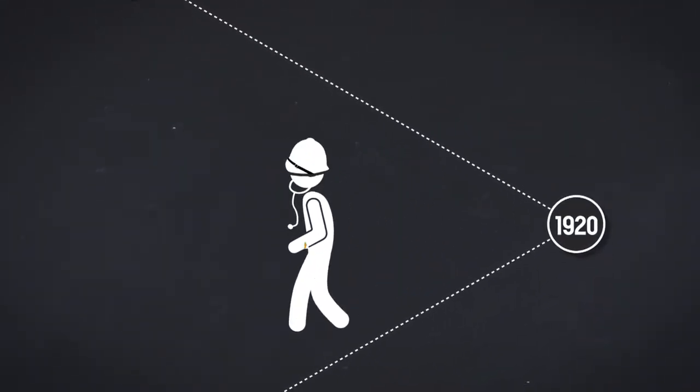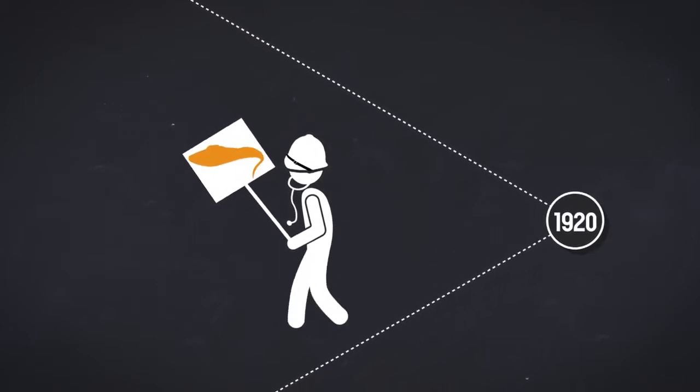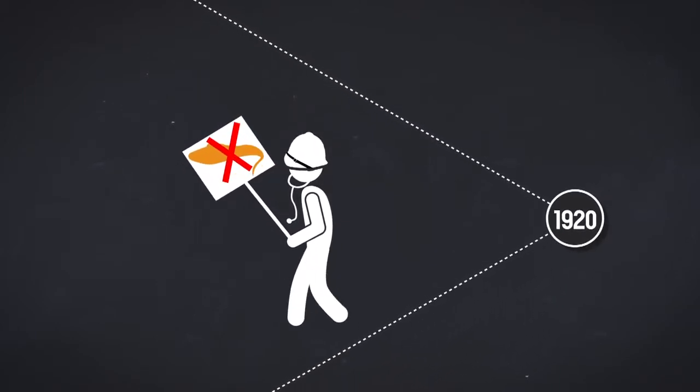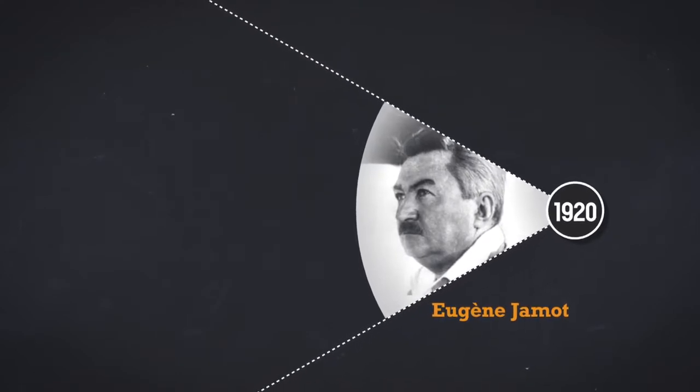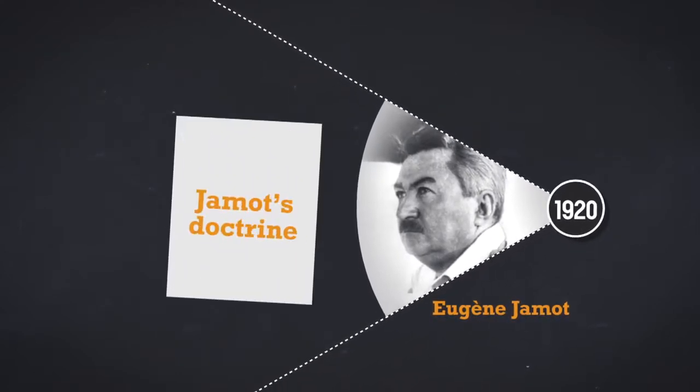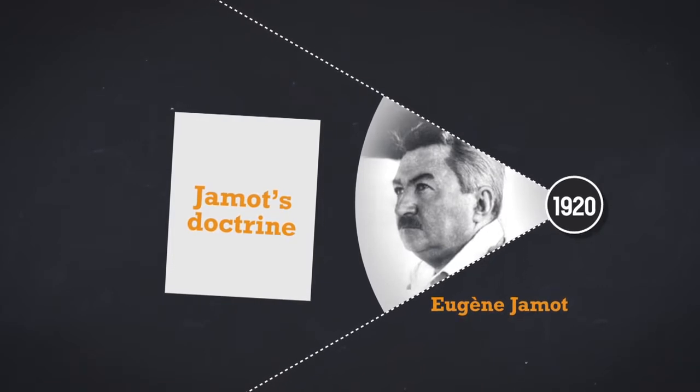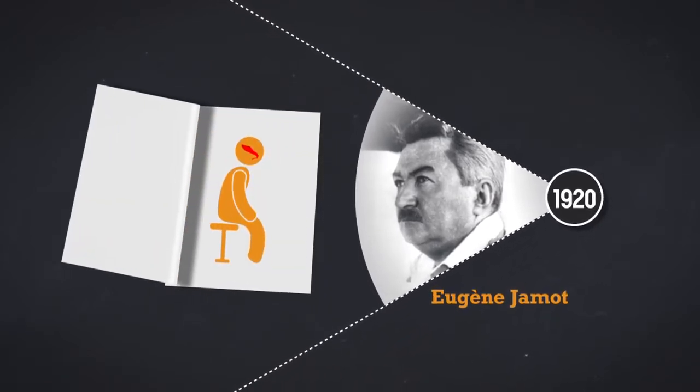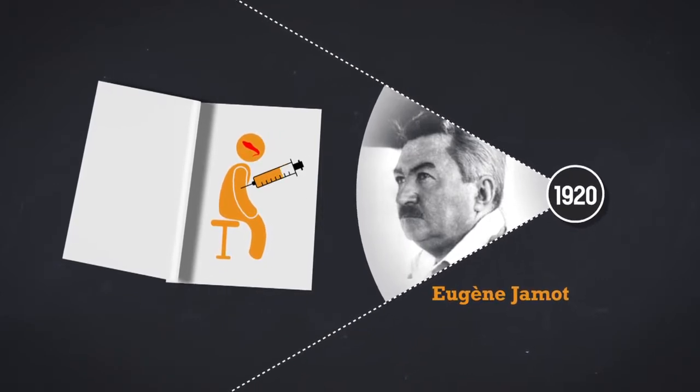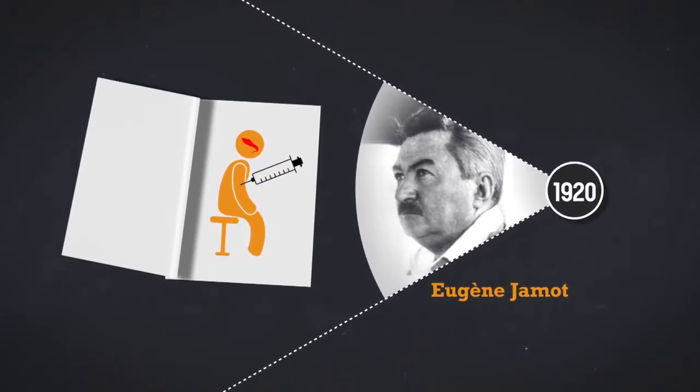At the beginning of the 1920s, colonial medicine attempted to eradicate the disease. Eugène Jameau, a French military doctor and director of the Pasteur Institute in Brazzaville, laid the foundations for what came to be called Jameau's Doctrine: identifying and treating all possible cases to eliminate the reservoir of parasites in humans.